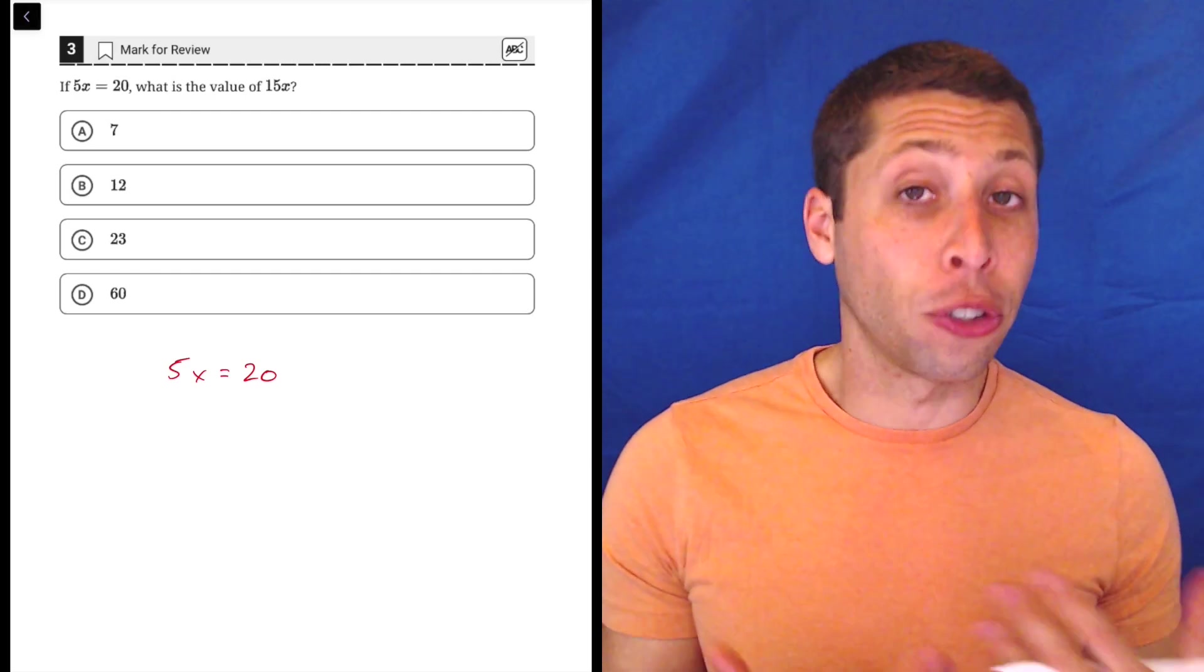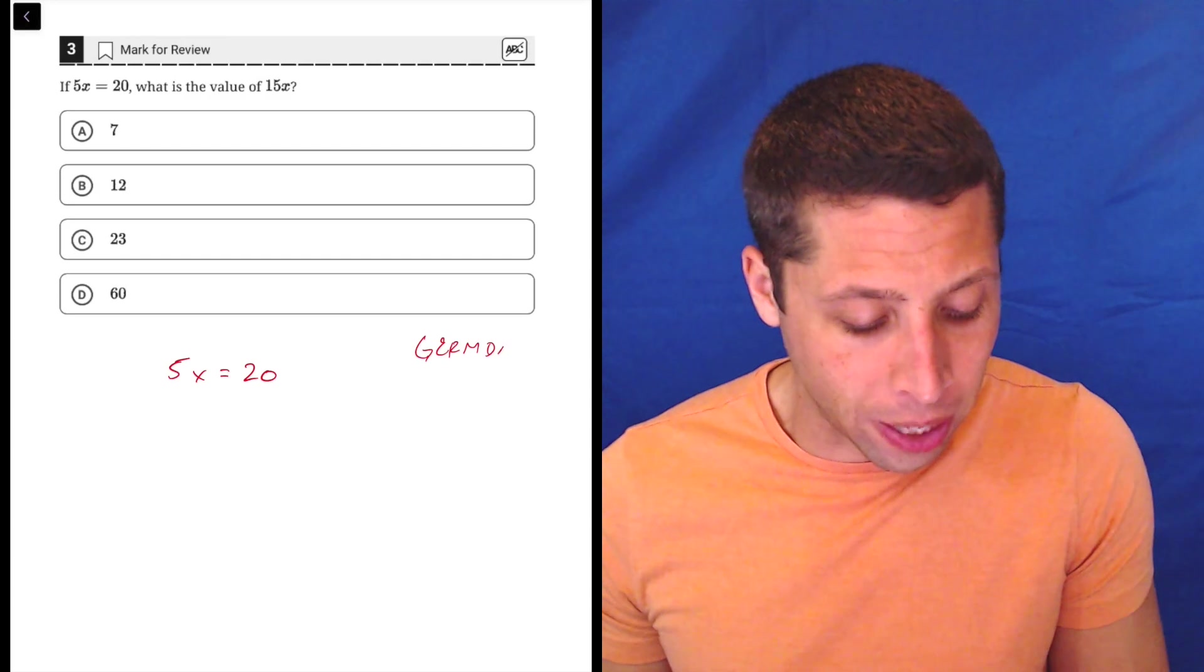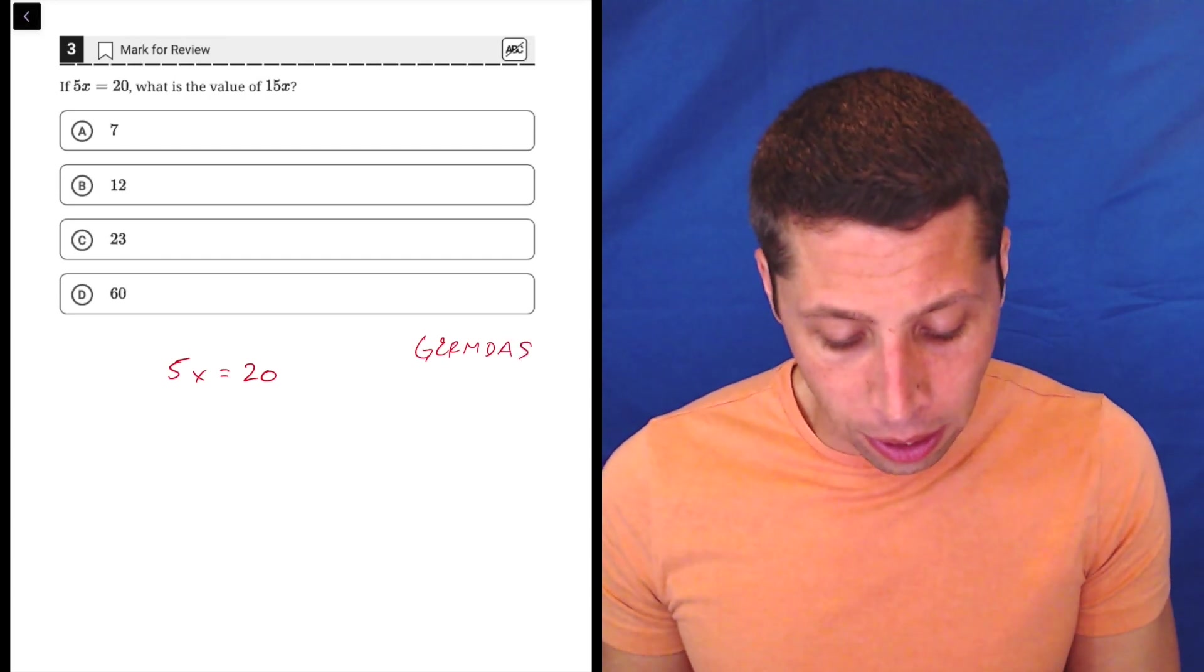Which means that we have to do the opposite of what we're kind of trying to get out of the way. So our x we need to be alone, so here what's going on? I see that my 5 and my x are being multiplied together.